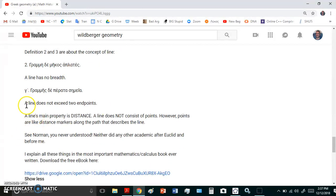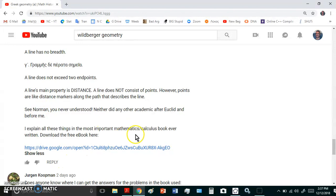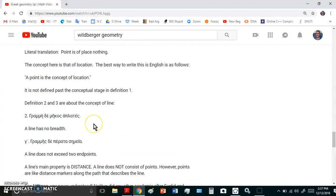And of course, definitions 2 and 3 are more information about the definition or the concept of a line, which means a line has no breadth and which means a line does not exceed two endpoints. And of course, nothing is mentioned here in particular about distance, which is the main property. That's really what Euclid was referring to. A line does not consist of points. However, points are like distance markers along a path that describes the line. Imagine if you have a road and you have signs that describe how far you've traveled in kilometers or miles. So Norman Wildberger, neither any other academic after Euclid or before me, understood these things.